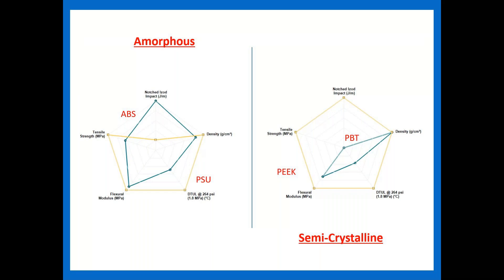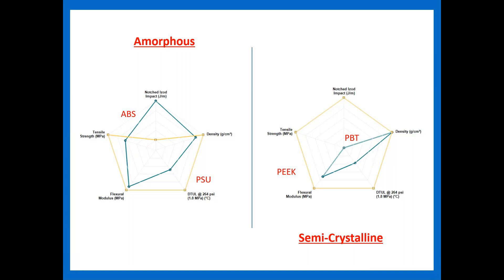With sustainability becoming such a large topic, we potentially have a sustainable version of every material as well — so maybe another 35,000 on top of that. And even within specifying different families of materials, your amorphous materials give better dimensional stability and less shrinkage, but within the same family there are big differences in performance. For example, ABS versus PSU, or PBT versus PEEK — huge differences. Across families — engineering versus commodity versus specialty — so many options, so we have to really dive into what we're looking for.